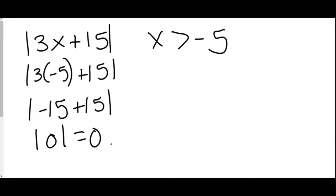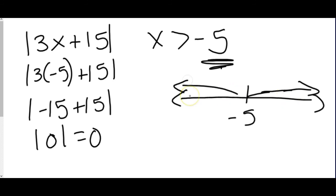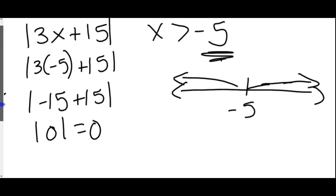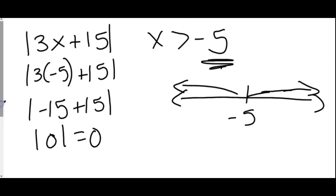So they pick that because everything to one side of negative 5 will either all change or all stay the same. And it can change depending on the expression. They'll always find that spot where it would equal 0. But for this expression, if I were to look at this as a number line, everything to the right of negative 5 will either all stay the same or all change. Same thing on the left.